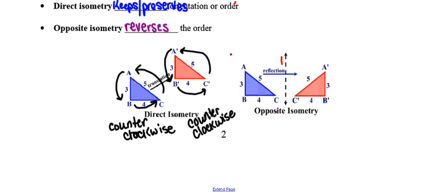So notice that both of these, both the image and the pre-image, have a counterclockwise orientation or order. What that means is that the orientation has been preserved. And because the orientation has been preserved, because it's the same direction in both, that's what makes this transformation a direct isometry.